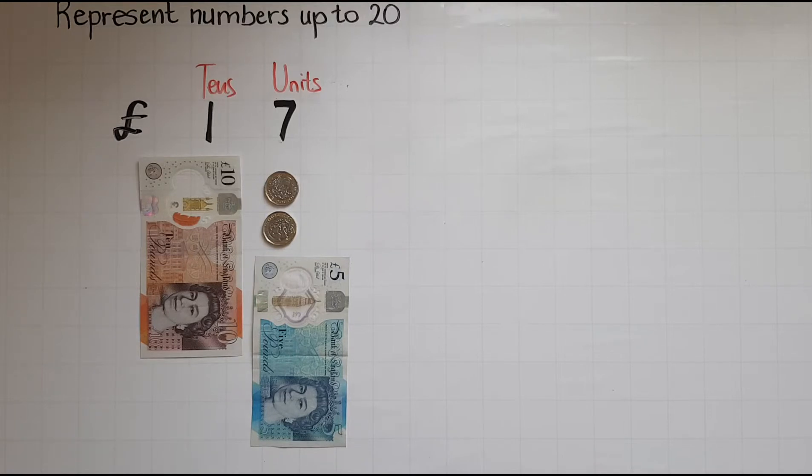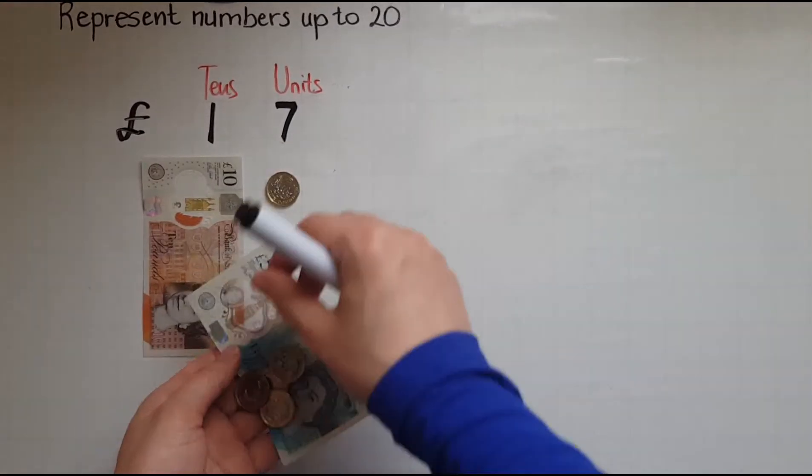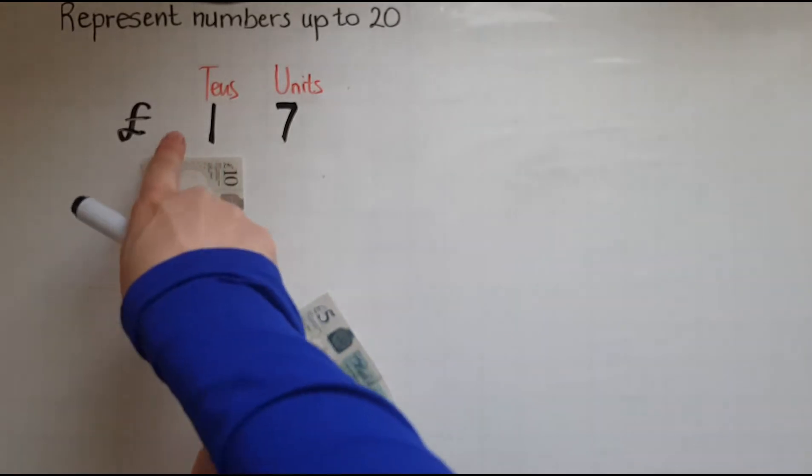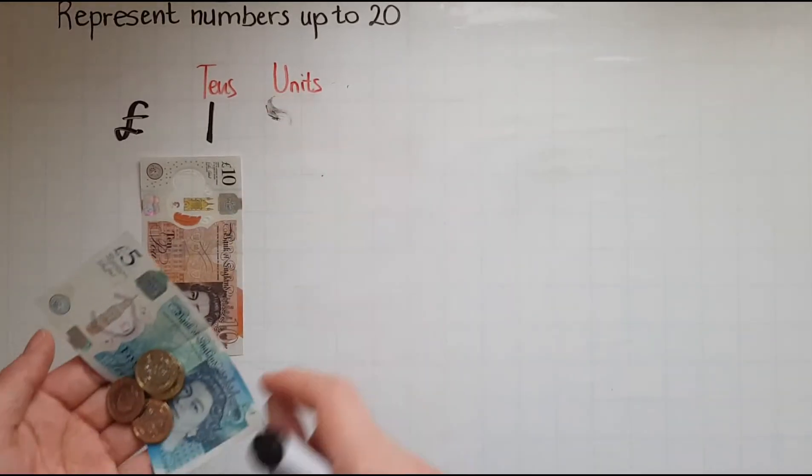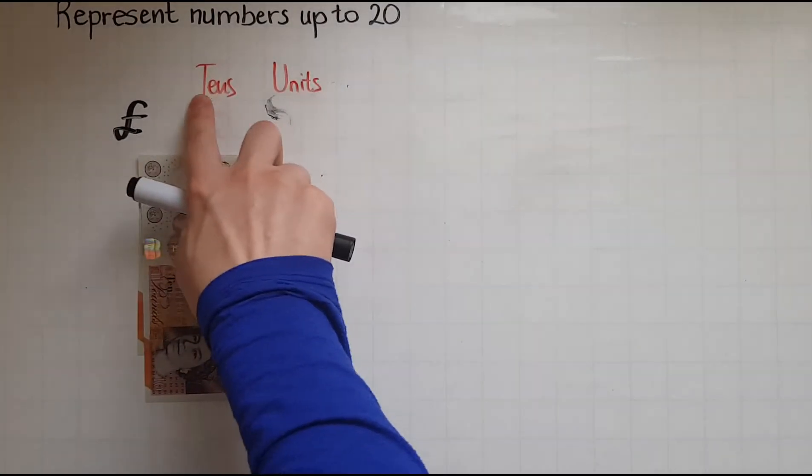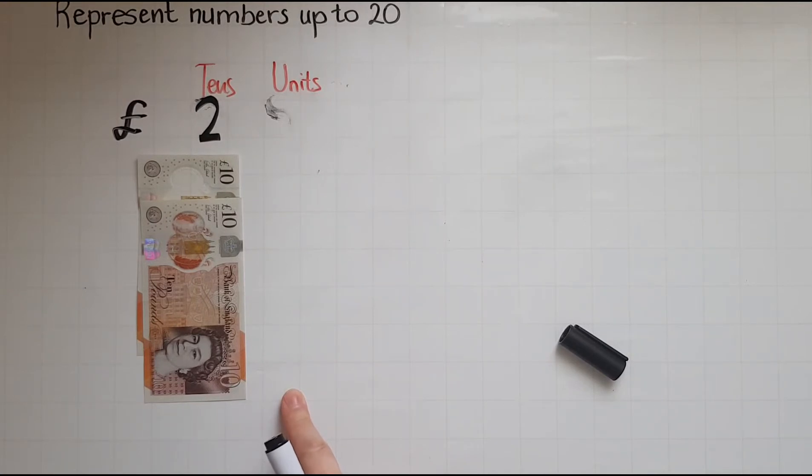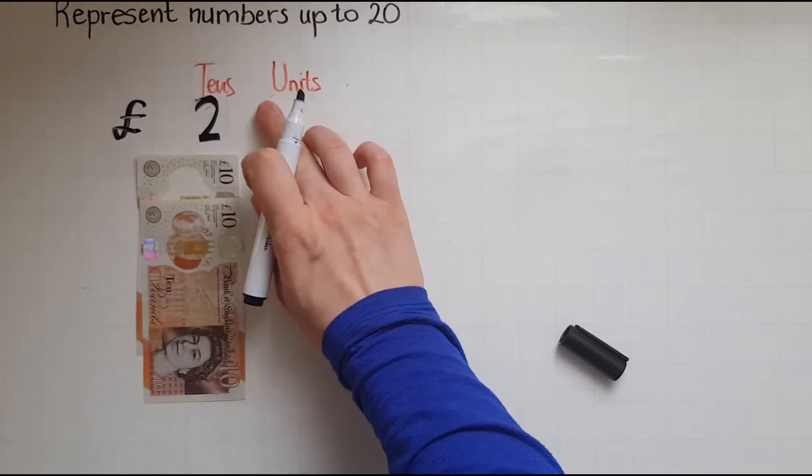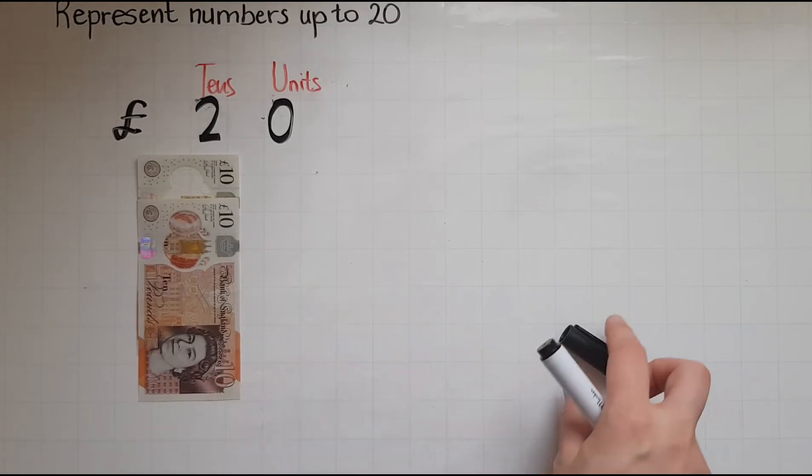I was then given another three pounds. So what's happened now in the units column? I've got five, six, seven, eight, nine, ten. So I've made a block of ten which needs to go under the tens. There are no units any longer. So I will exchange this for a ten pound note. I'm making this into two tens now. Do I have any pound coins or any five pound notes or two pound coins? No. So there are no units. So I've got two tens and zero units making this all twenty pounds.